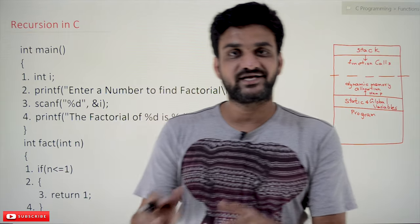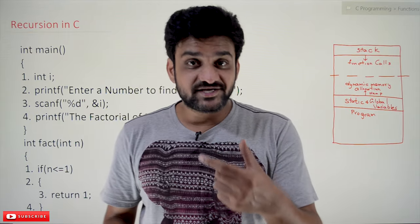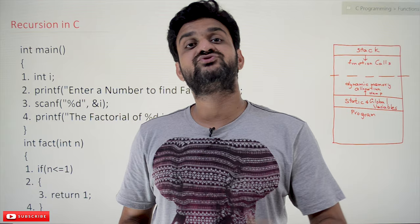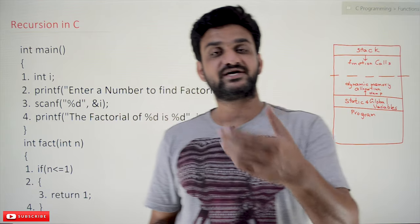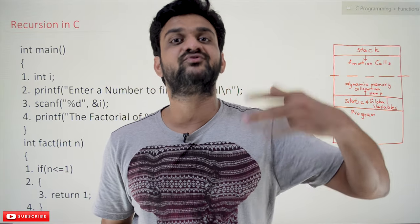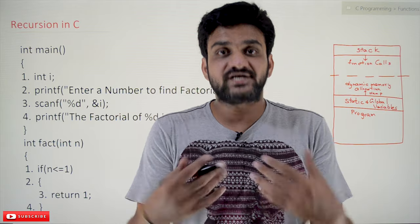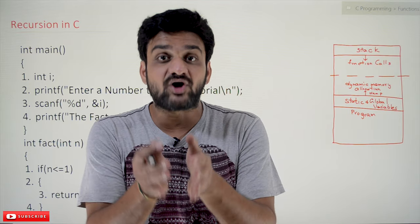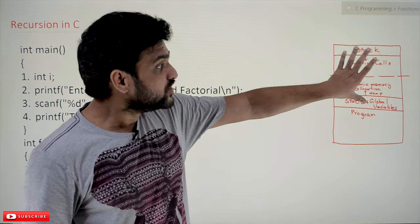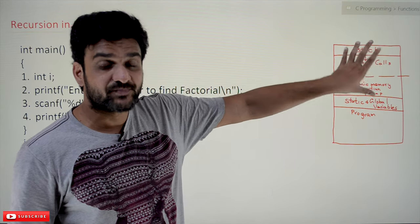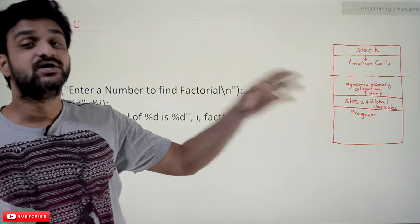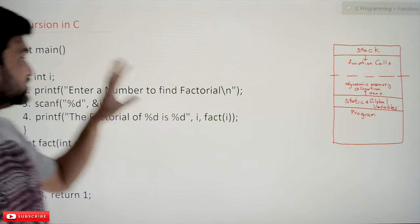Now coming to this class, we'll try to understand recursion in C. What is meant by recursion? Recursion is a mechanism used to solve problems. Recursion means it is a function calling itself. If a function is calling itself, we call it a recursive function, and using those recursive functions we can solve problems. This is totally based upon the concept of how a process is created for a program, and based upon that concept the concept of recursion has evolved.